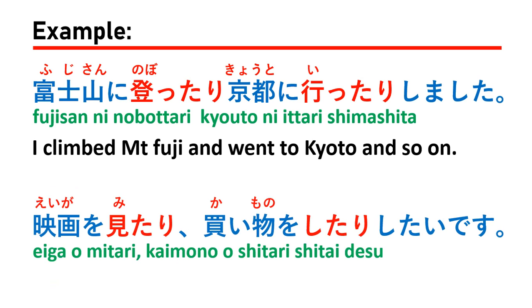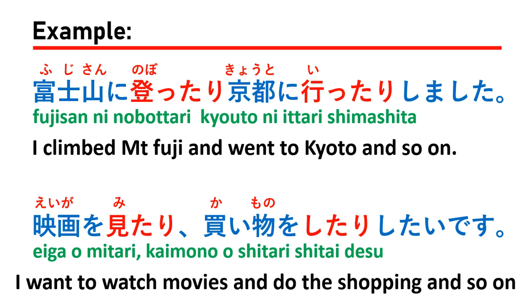The next sample is: 映画を見たり買い物をしたりしたいです, which means 'I want to watch movies and do shopping, and so on.'